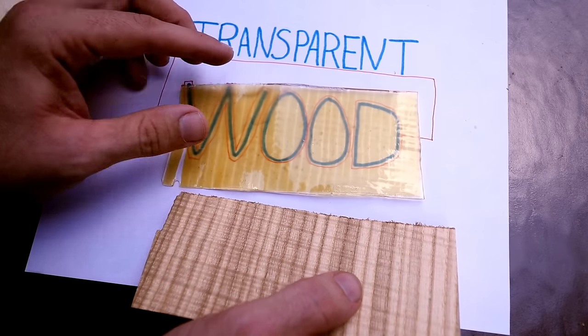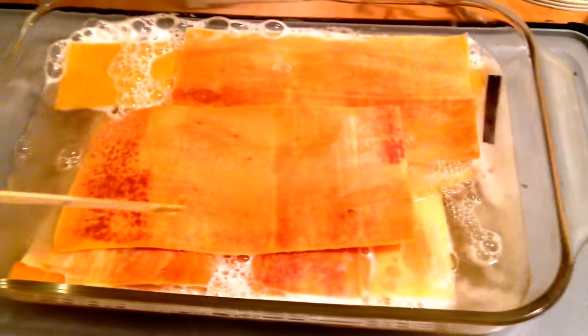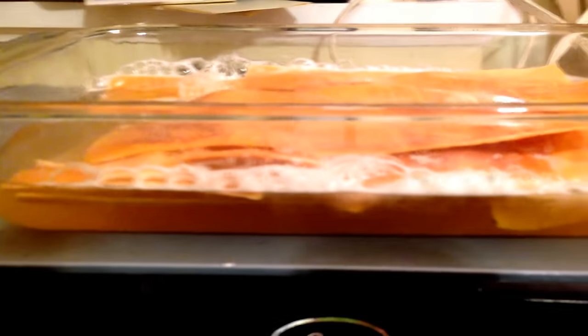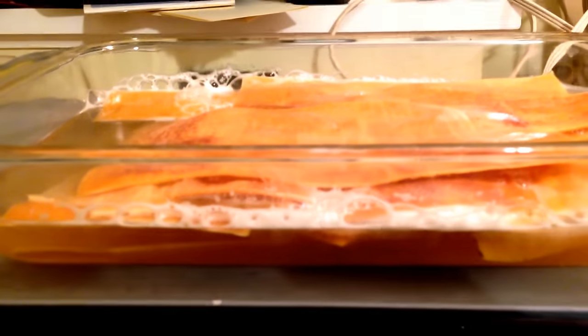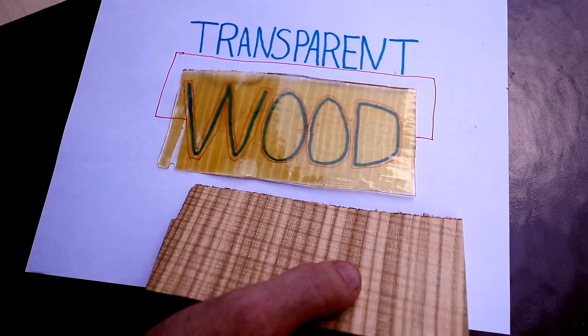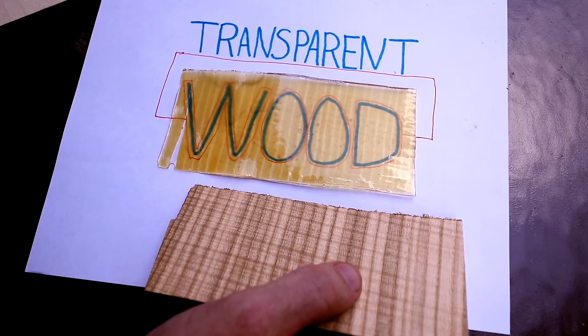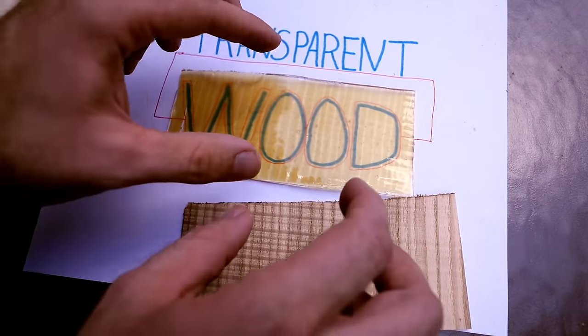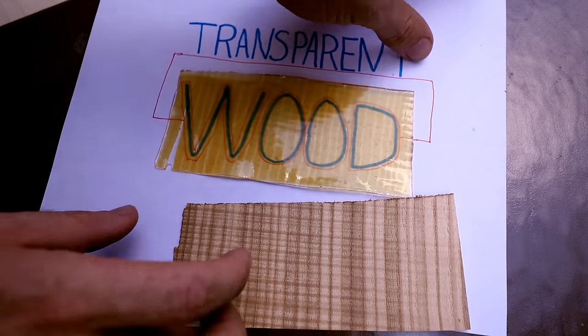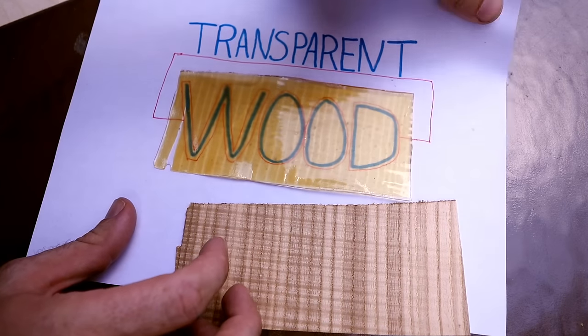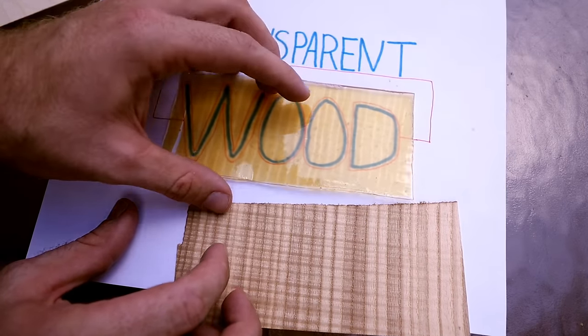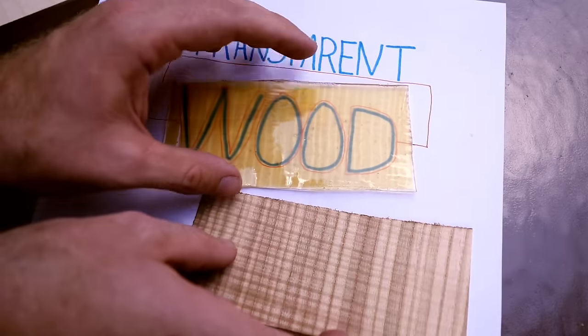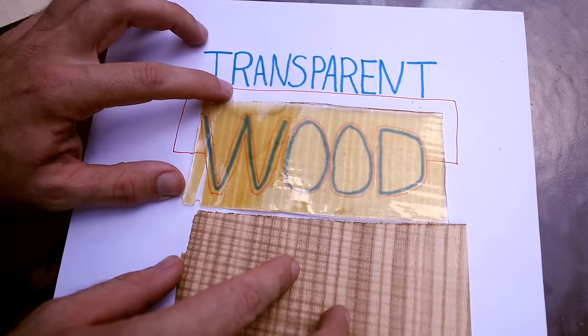Then, once you get rid of all that cellulose, you dunk it into a bath of hydrogen peroxide, which bleaches it a little bit more. And these two steps, the sodium hydroxide sulfite baths and then the hydrogen peroxide baths, those are apparently more standard methods that people use when creating paper, for making your paper nice and white and pretty and not having it the color of regular wood. So they take that basic paper-making process.